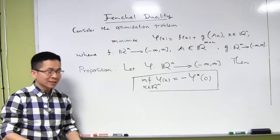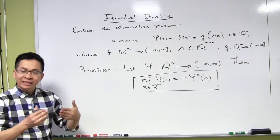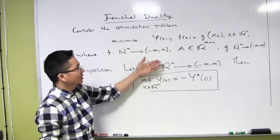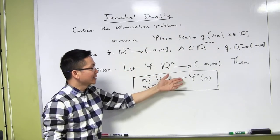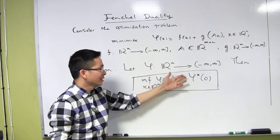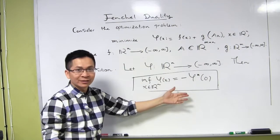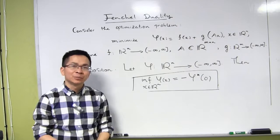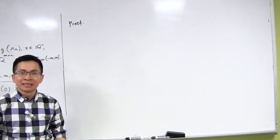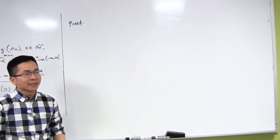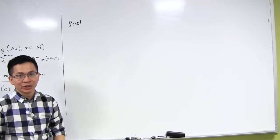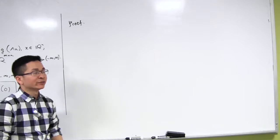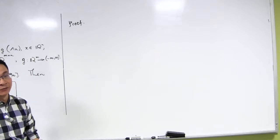The first proposition gives a very important connection between the optimal value of this optimization problem and the Fenchel conjugate of the function φ. So let me go ahead and give the detailed proof of this proposition. The proof is very simple — it is based on the definition of the Fenchel conjugate. So let me start by recalling the definition of the Fenchel conjugate of the function φ.